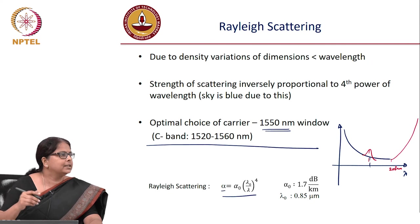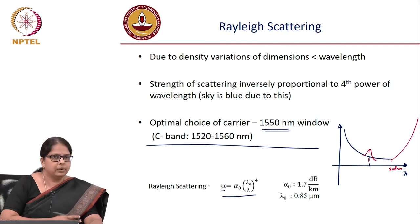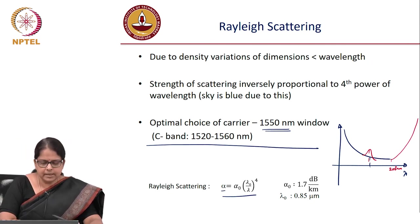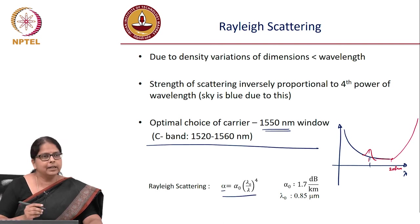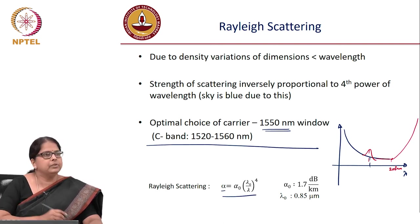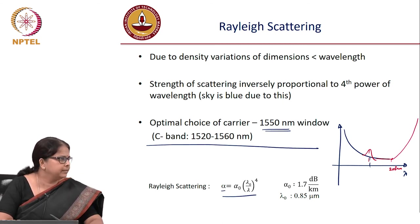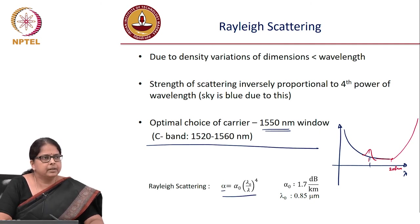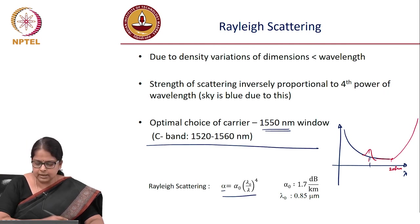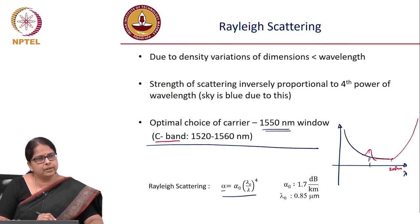There is a sweet spot of minimum loss at the 1550 nm window — a range of wavelengths centered around 1500–1550 nm. This is called the C-band (conventional band) of optical communication, where C stands for conventional.